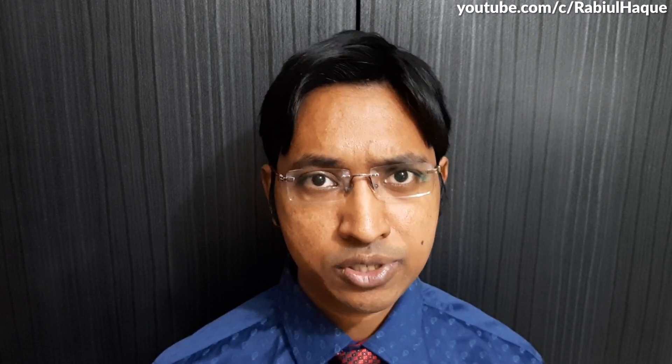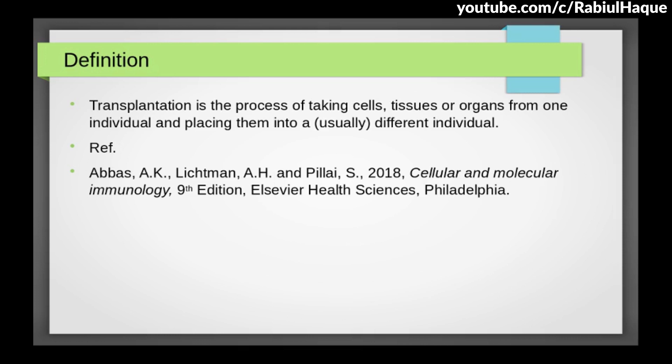Always remember the transplanted cells, tissues or organs are often referred to as a graft. The types of transplant or graft are: autograft, syngenic graft or isograft, xenograft, and allograft. Let's talk about these various types of transplant one by one.